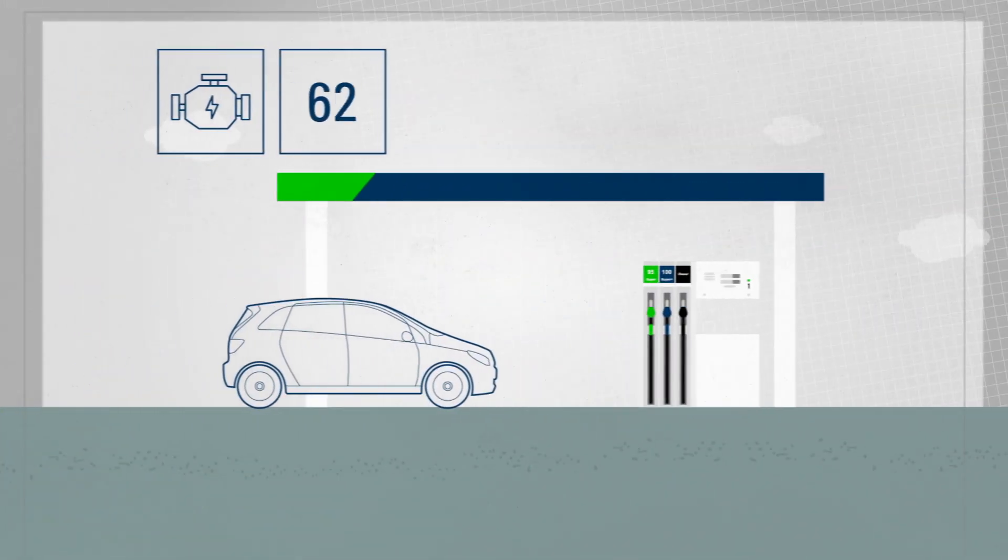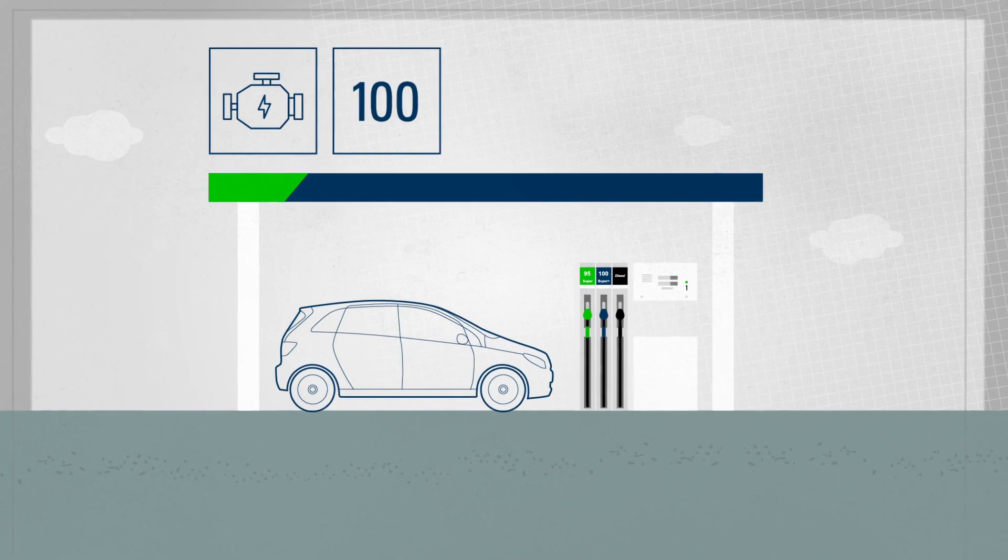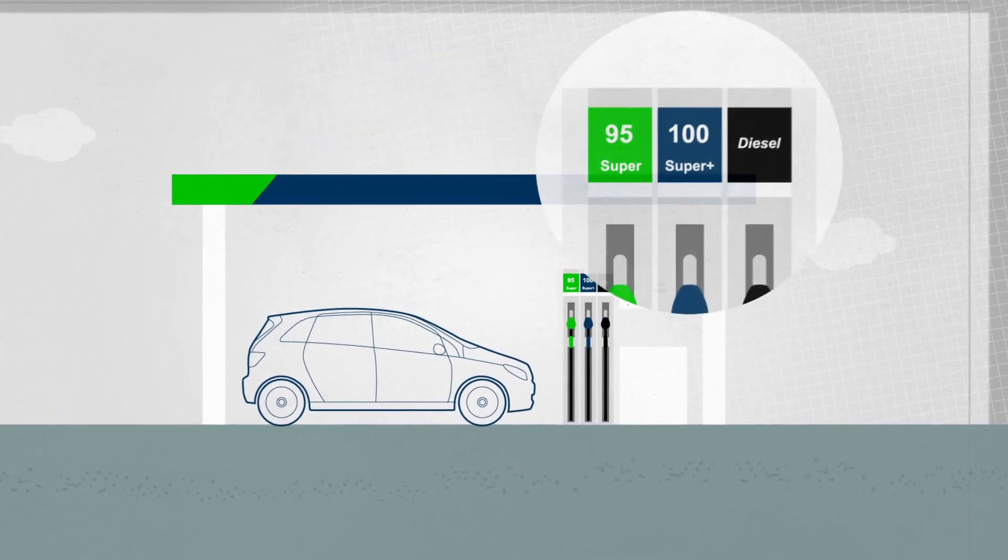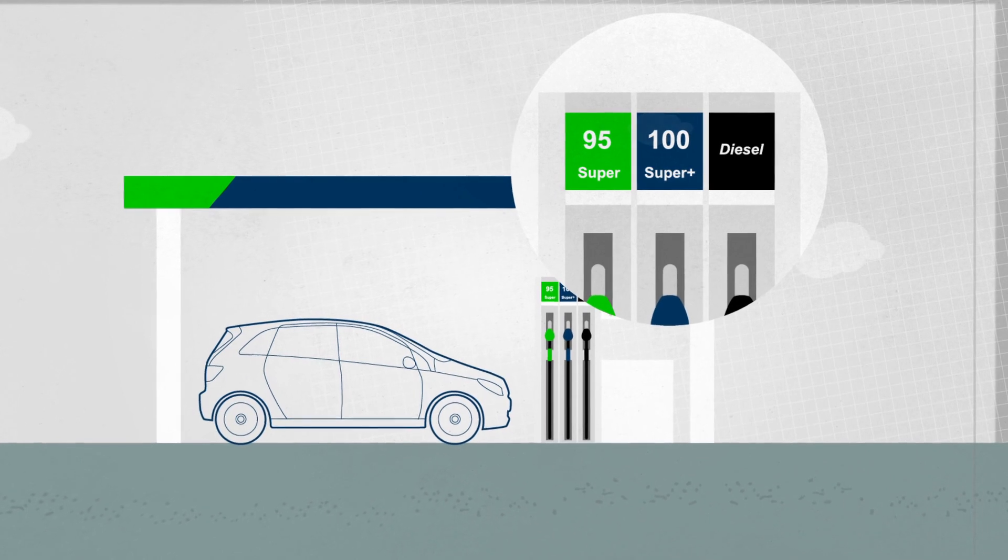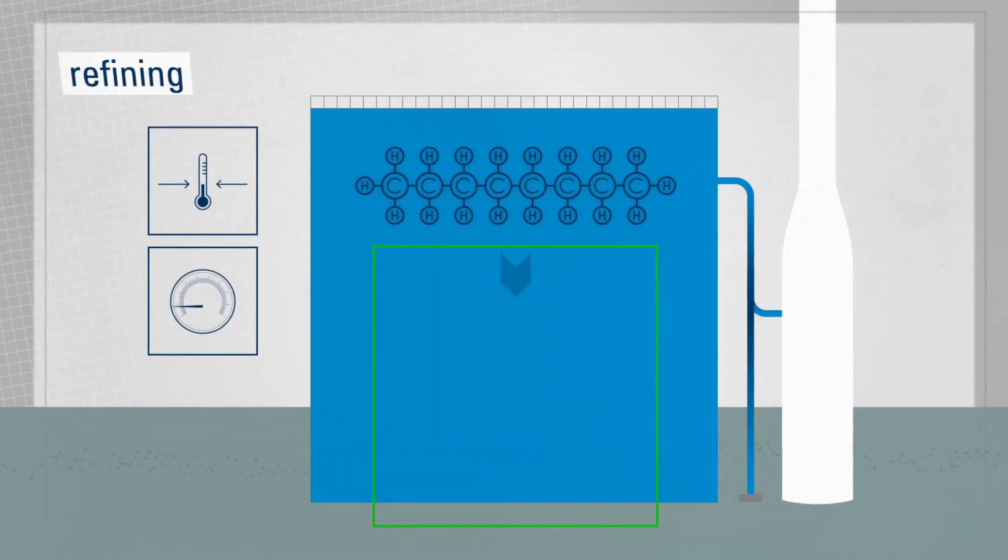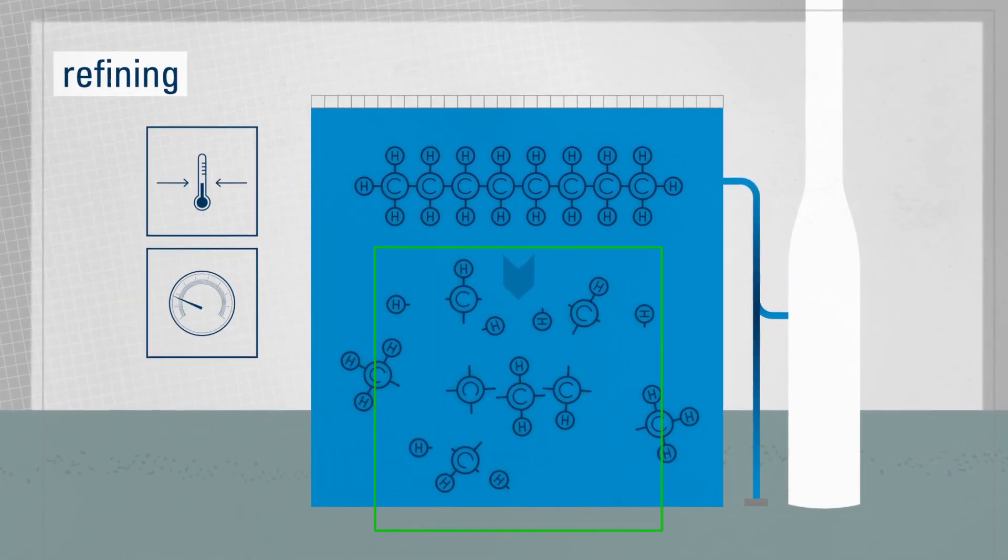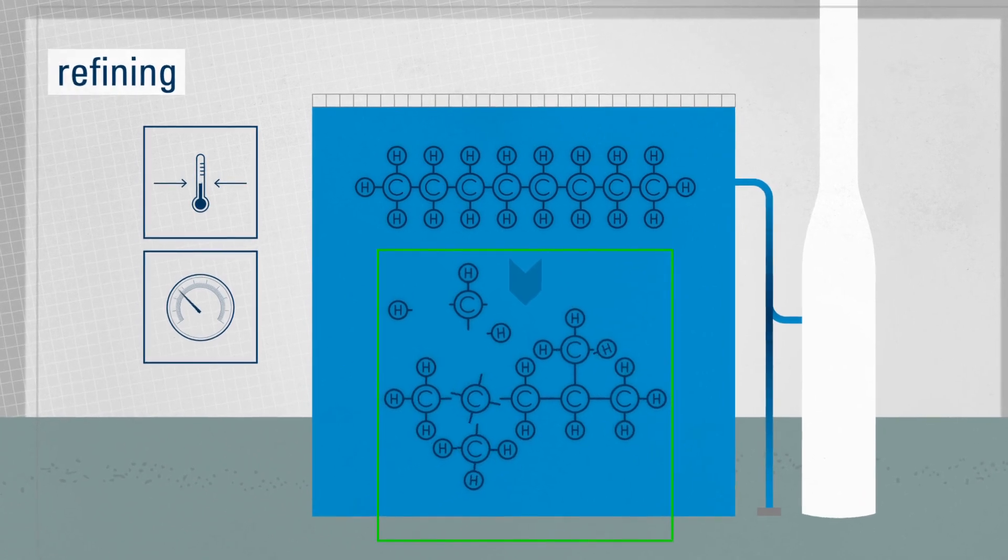Modern engines require fuels with a high octane rating. The higher this rating, the better the combustion quality. The octane level of pure naphtha is too low, but chemical processes change the molecular structure of the gasoline to increase its rating.